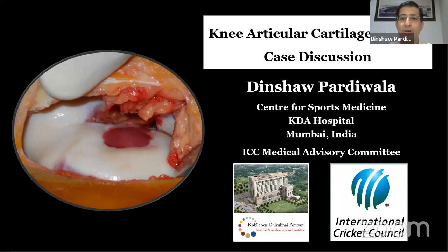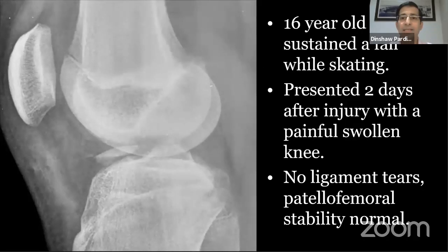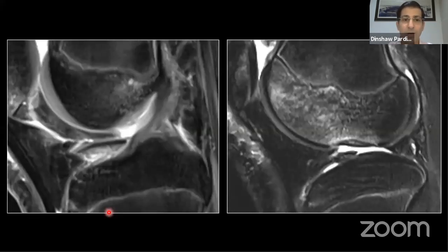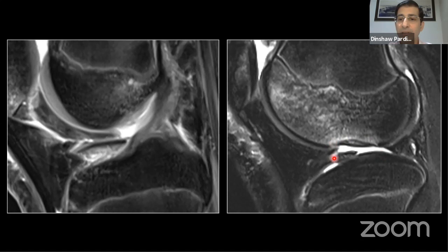We'll start with the first case: a 16-year-old boy who sustained a twisting injury to his knee while skating. He presented two days after injury with a painful swollen knee. He has no ligament tears, his patellofemoral joint is stable. The X-ray shows a fragment of bone. On MRI, we can see an osteochondral fracture lying in the intercondylar area. His ligaments and menisci are normal.